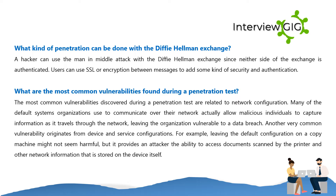The most common vulnerabilities discovered during a penetration test are related to network configuration. Many of the default systems organizations use to communicate over their network actually allow malicious individuals to capture information as it travels through the network, leaving the organization vulnerable to a data breach. Another very common vulnerability originates from device and service configurations — for example, leaving the default configuration on a copy machine might not seem harmful, but it provides an attacker the ability to access documents scanned by the printer and other network information stored on the device itself.